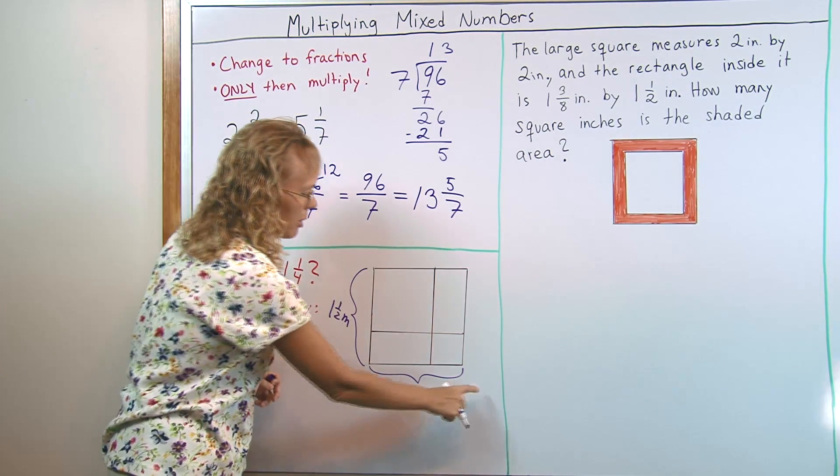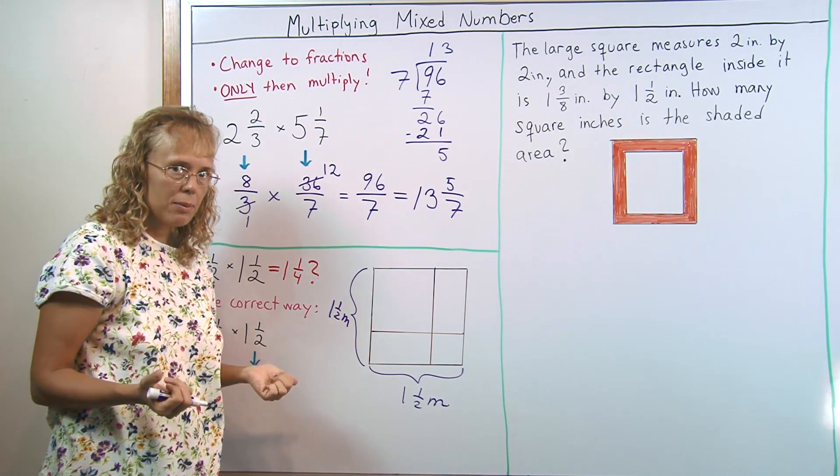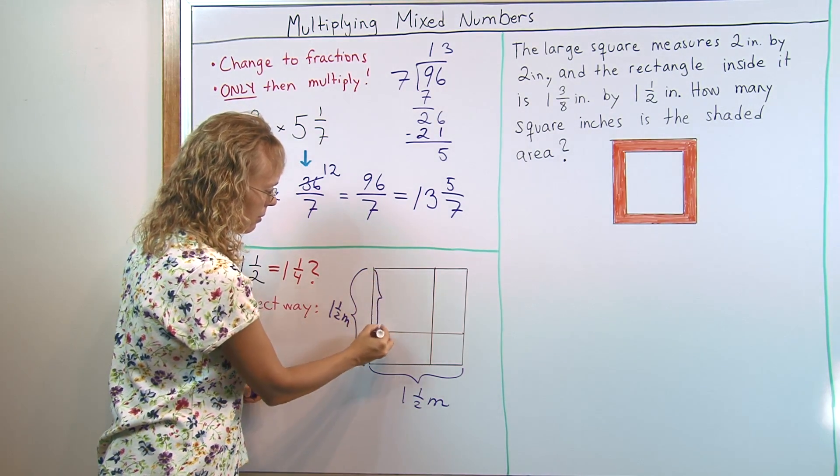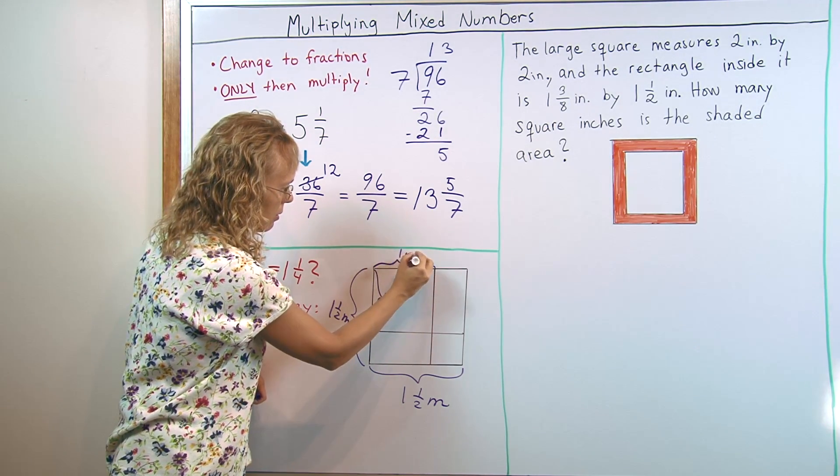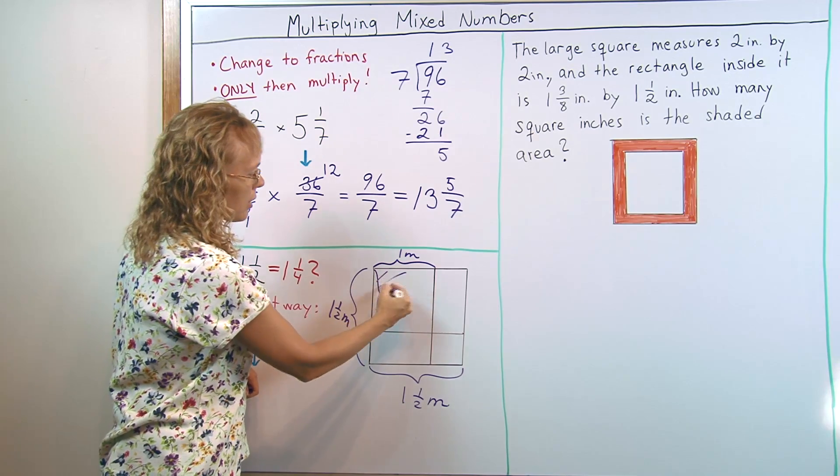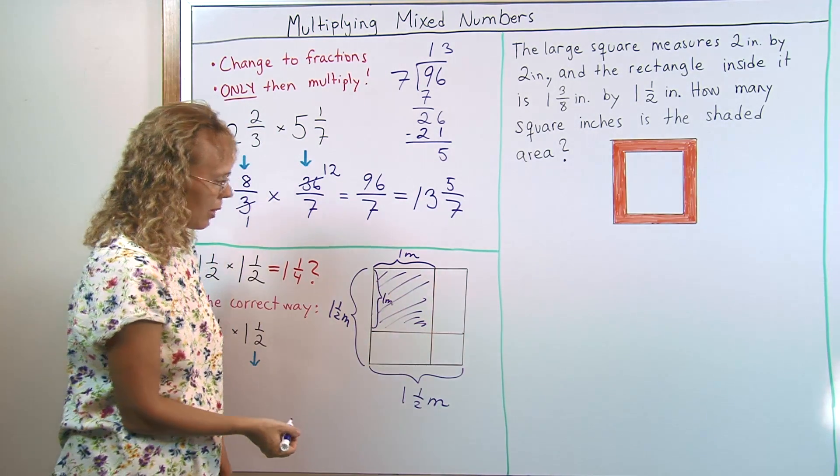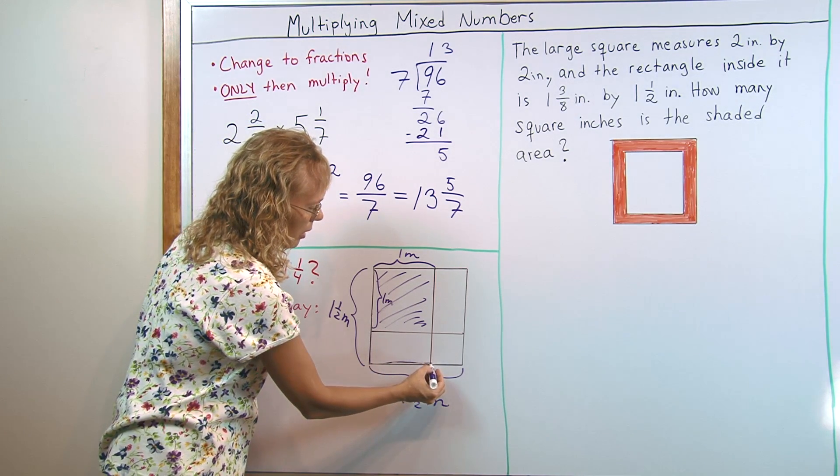Now, when I multiply this times this, will I get 1 and 1/2 square meters? You see, this much here is 1 meter. This is 1 meter. And this is 1 meter. So this here is alone 1 square meter. Right? Then here is half a meter times a meter.